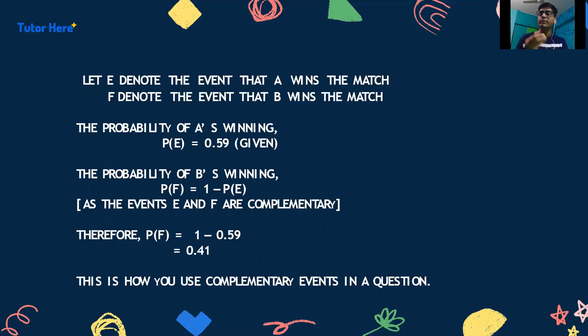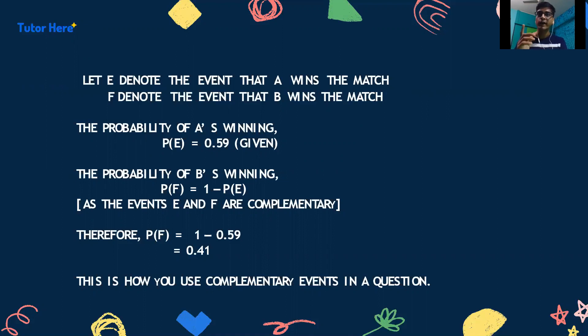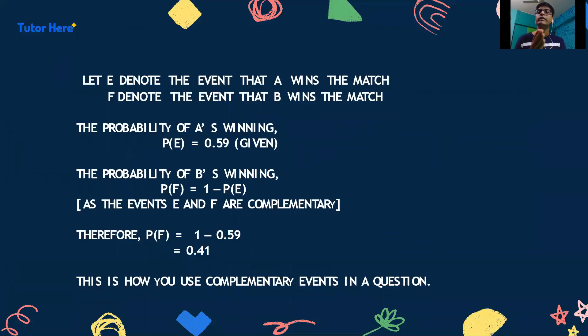Therefore, P(F) can also be written as 1 minus P(E). So P(F) equals 1 minus 0.59, which equals 0.41. This is how you use complementary events in a question.